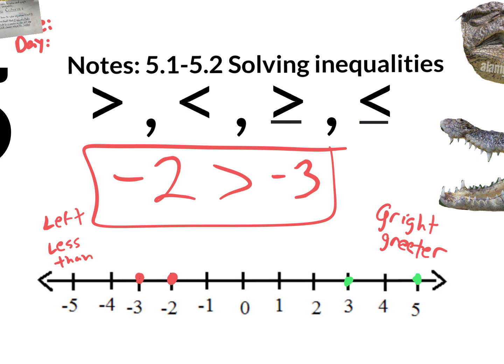If you already know this, don't write it down. But if you forgot, write it down. The inequality has to open up to the greater value. On the number line, whatever's on the right side is greater and whatever's on the left side is less.